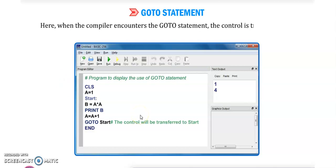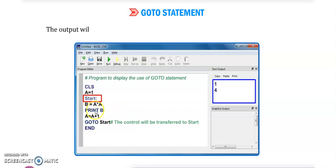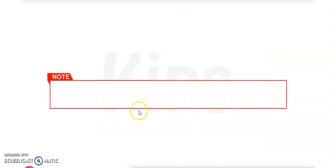In this program there is an infinite loop because there is no conditional statement or stop button for execution. So the output will keep coming infinitely. When the compiler encounters the goto statement, the control is transferred to the start again and again — this label sets up a loop. Output will be printed infinitely as no condition is applied in this program.